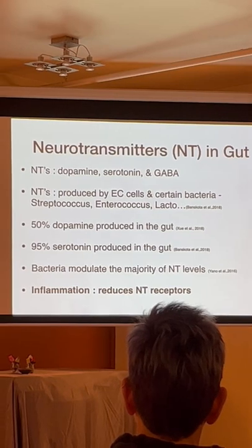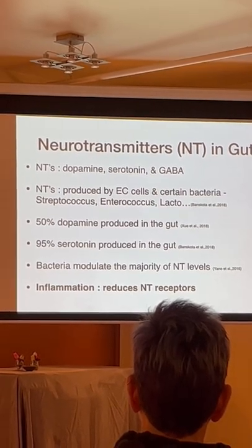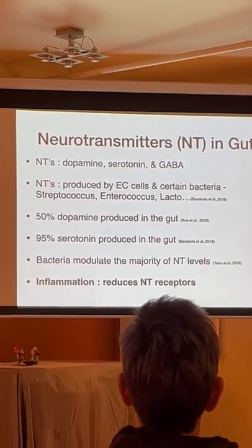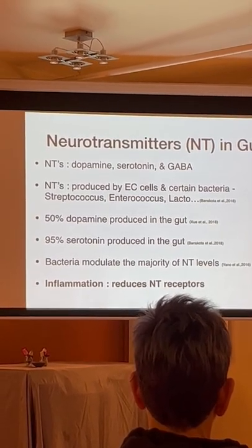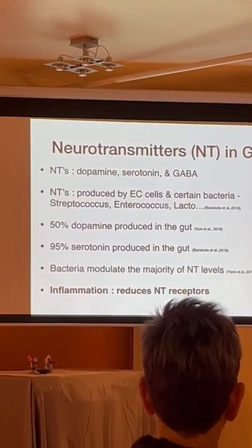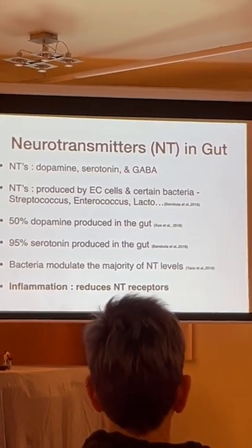So dopamine, serotonin and GABA. We create 95% of serotonin in the gut. It's incredible. 50% of dopamine is produced in the gut, as well as the bacteria which are in the gut control how much is being produced.